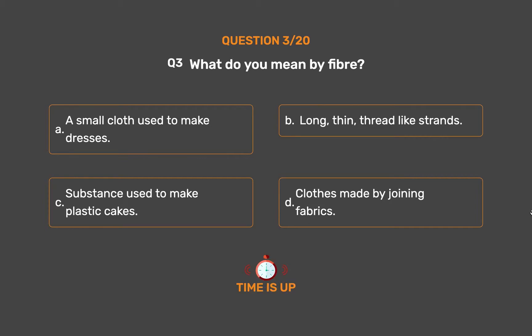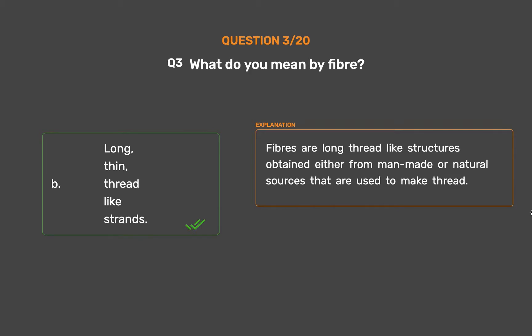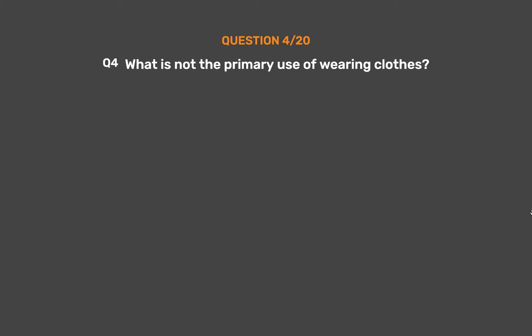The correct answer is Option B, Long, thin, thread-like strands. Fibers are long thread-like structures obtained either from man-made or natural sources that are used to make thread.